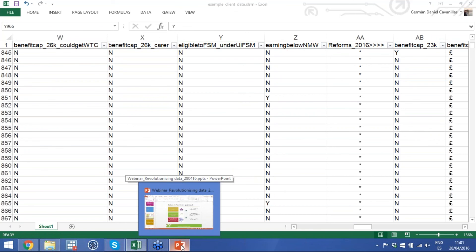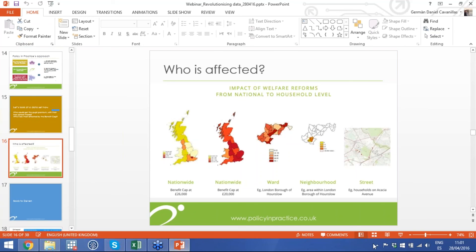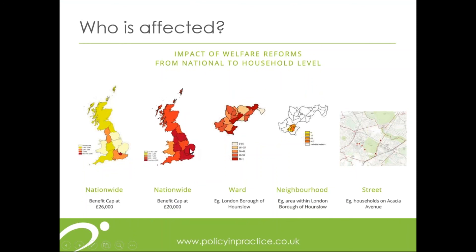In addition to these datasets, we also produce maps to show the effects of welfare reform more visually — for example when presenting to members. We can work at the national level showing a breakdown of different regions by how affected they are by the current and lower benefit cap. We can then zoom into ward level — for example the London Borough of Hounslow — showing how many households will be affected by the cap in each specific ward, and even into individual neighbourhoods within wards.